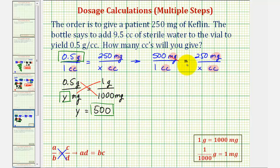500 times x must equal 1 times 250. Well, 500 times x is 500x equals 1 times 250 is 250. Divide both sides by 500. We have x equals 250 five-hundredths, which would be one-half, or 0.5.